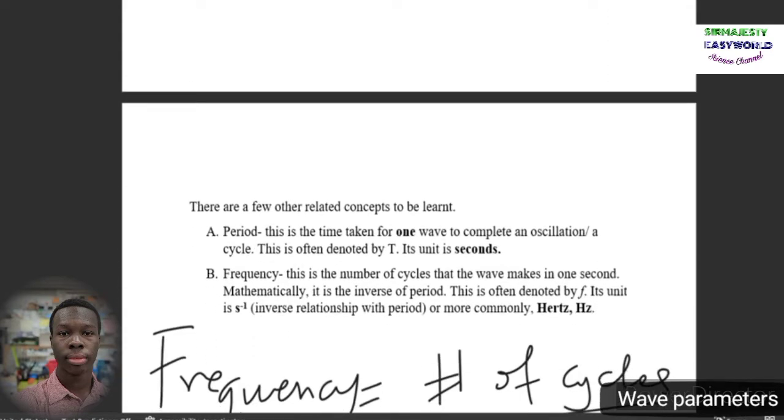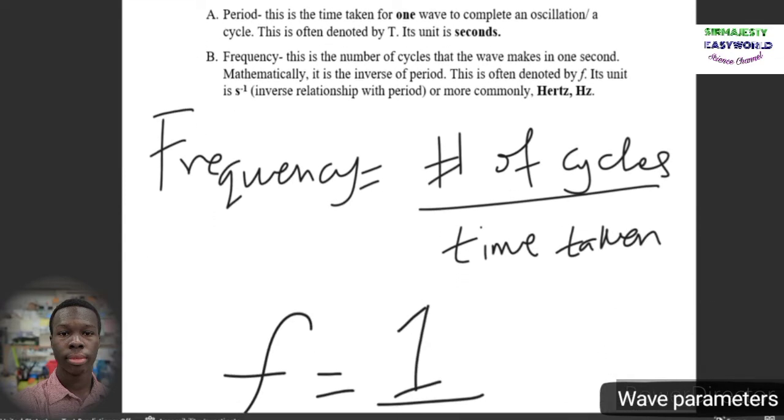There are a few other related concepts to be learned concerning waves. The first thing is period. The period is the time taken for one wave to complete an oscillation or to complete a cycle. This is often denoted by capital letter T and its unit is seconds.